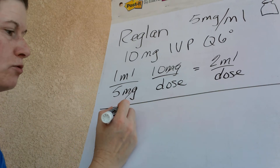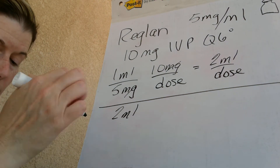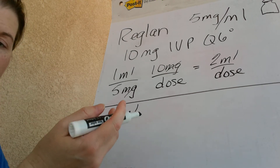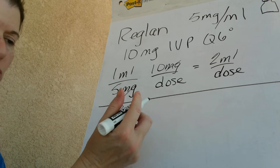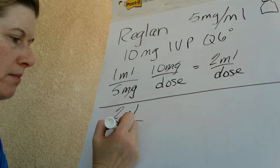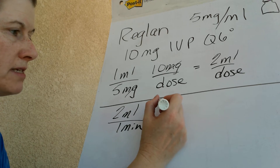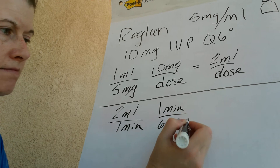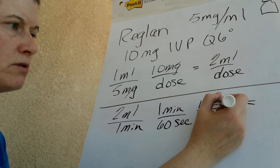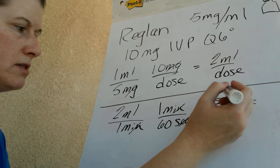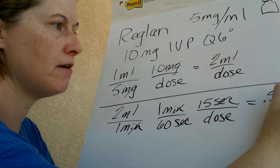The second problem: I have 2 mLs in my syringe. Reglan does not have to be diluted. I'm going to give 2 mLs over 1 minute because the dose is 10 milligrams — you can give it a little faster, but that's the general rule. I want mLs per 15 seconds, so I say: 2 mLs per 1 minute × 1 minute per 60 seconds × 15 seconds. This gives us 0.5 mLs every 15 seconds.